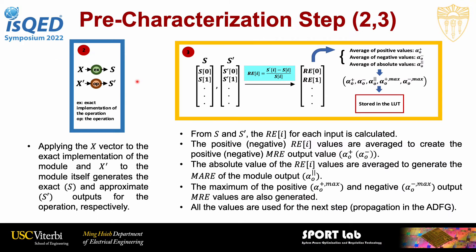At the second stage, we generate the exact and approximate values for the output of the module. We apply X to the exact implementation of the module and apply X prime to the module itself in order to obtain S and S prime. At the final stage, from S and S prime, we separately generate the relative error values and generate the RE vector. We average the positive and negative values of RE's to generate alpha plus and alpha minus of the output, and average the absolute values of RE's to generate alpha absolute of the output. We also record the maximum values of positive and negative RE's for future use, and store all these values in a lookup table.